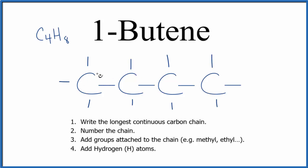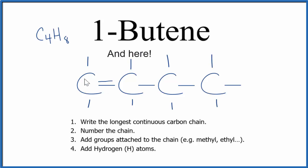So the double bond in 1-butene goes right here. Since each carbon can only be bonded to four things, we do need to get rid of one of these hydrogens. Now this carbon has four bonds, and all of the carbons are bonded to four things.